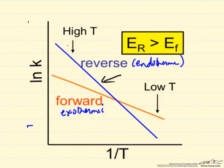At low temperatures, the rate constant for the forward reaction is much larger than that for the reverse reaction. Remember this is a log scale. At higher temperatures, the rate of the reverse reaction is much higher.